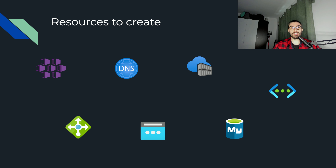As you can see on the slide in front of us, we have a few resources that we want to create in Azure in order to support our ecosystem and be able to have our application function properly. Starting from the top left, we have an AKS cluster — Azure Kubernetes Service — which is the container orchestrator that's going to host our applications.